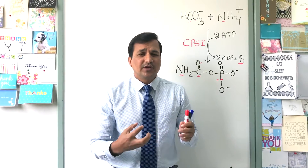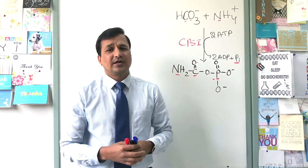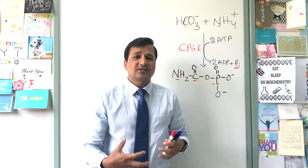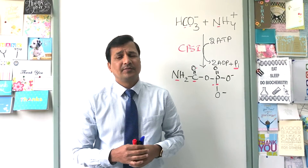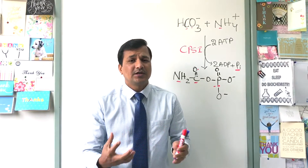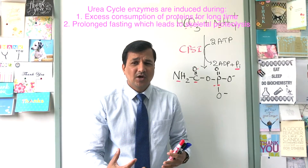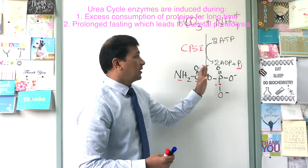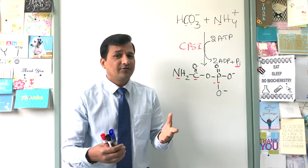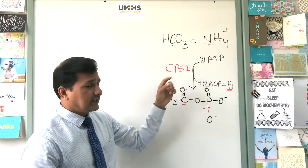Otherwise, urea cycle regulation is done as a feed-forward mechanism. Because the urea cycle is a disposal pathway, the availability of substrate itself will induce urea cycle enzymes. Whenever there is accumulation of ammonium ion or too many amino acids available that need to be degraded, urea cycle enzymes will be induced. This induction is seen in positive nitrogen balance — when a person is taking too much protein beyond the body's capacity — or during prolonged fasting.